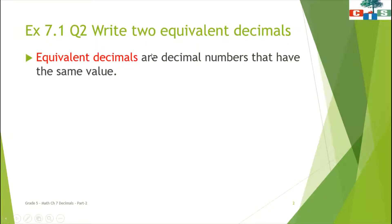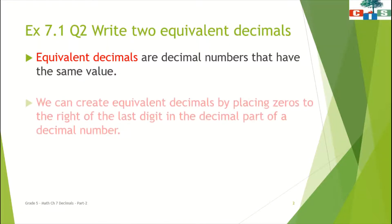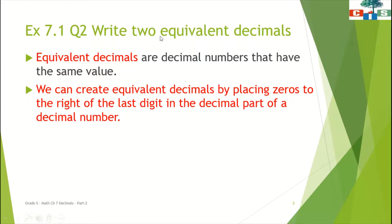Equivalent decimals are the decimal numbers that have the same value. Now, how to create equivalent decimals? We can create equivalent decimals by placing zeros to the right of the last digit in the decimal part. We have to just put zeros to the right of the last digit in the decimal part.